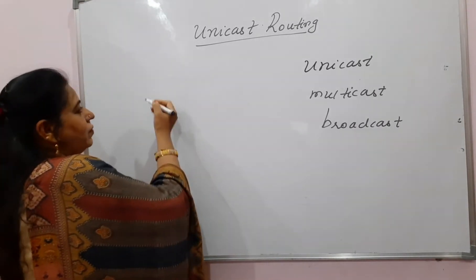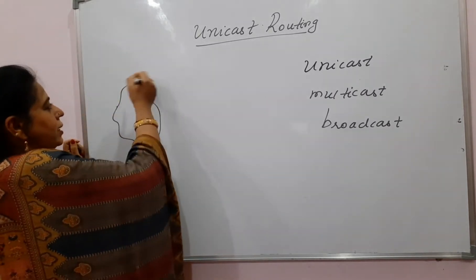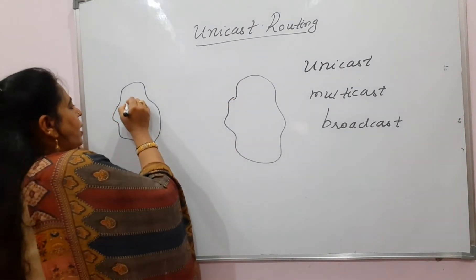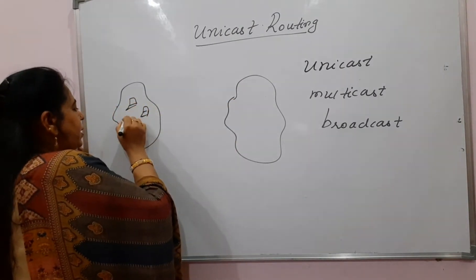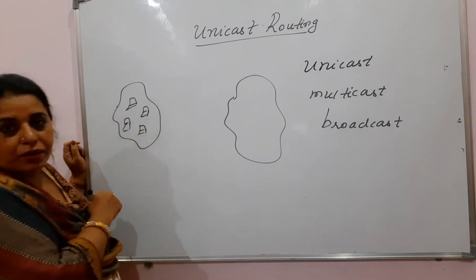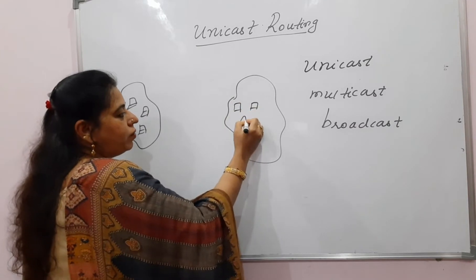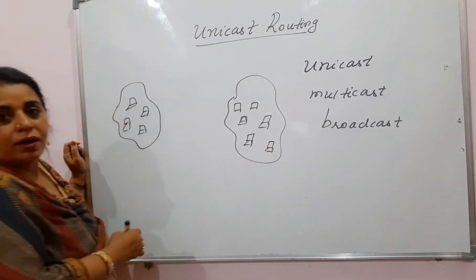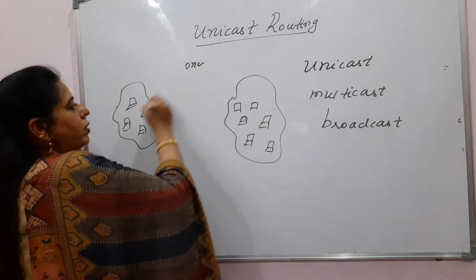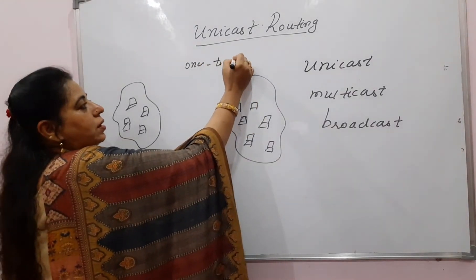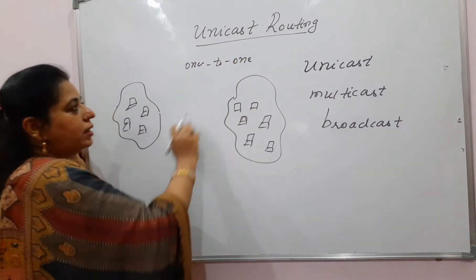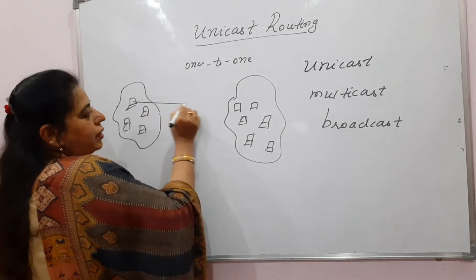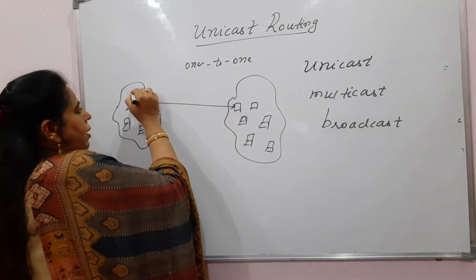To understand the concept, take one example: there is one network here, let's call it network A, and another network. There are different hosts present in each network. If the host in one network wants to communicate with one host of the other network, we say it is one-to-one communication.